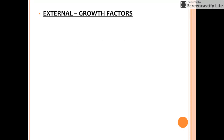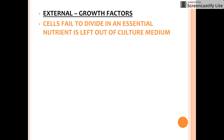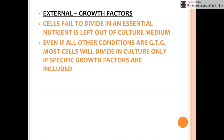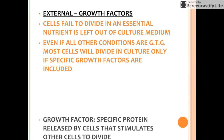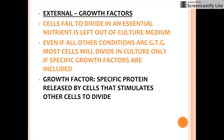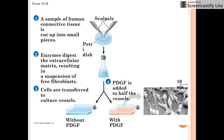In addition to internal factors, there are external factors outside of the cell that help control cell division. Researchers have identified many external factors, both chemical and physical, that can influence cell division. For example, cells fail to divide if an essential nutrient is left out of the culture medium. Most types of mammalian cells divide in culture only if the growth medium includes specific growth factors — proteins released by certain cells that stimulate other cells to divide.